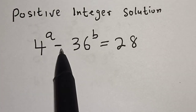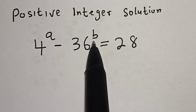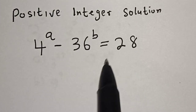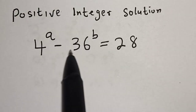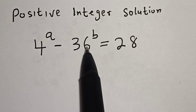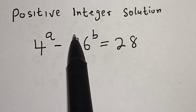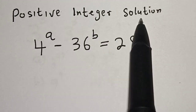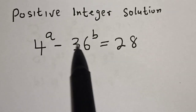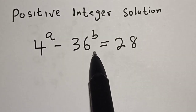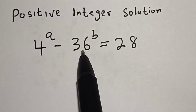4 to the power of a minus 36 to the power of b is equal to 28. Hi everyone, welcome to my class. In this class we want to find the positive integer solution of a and b from this given equation.